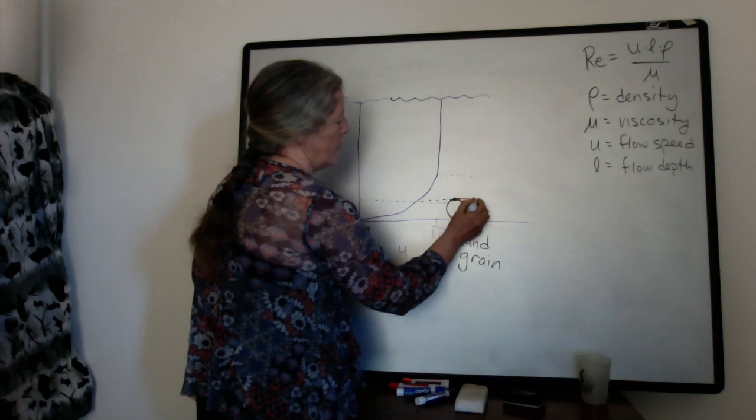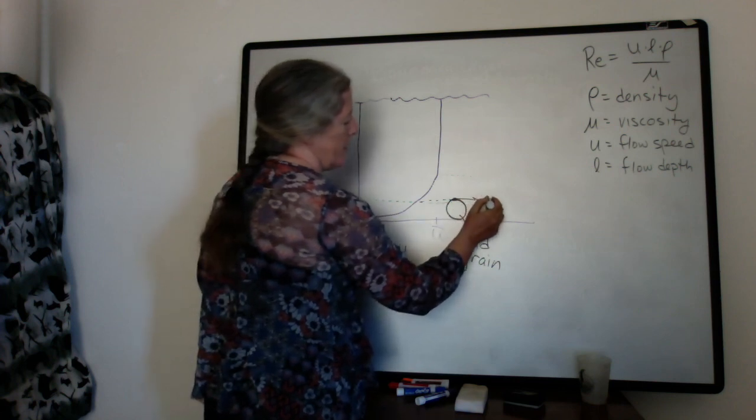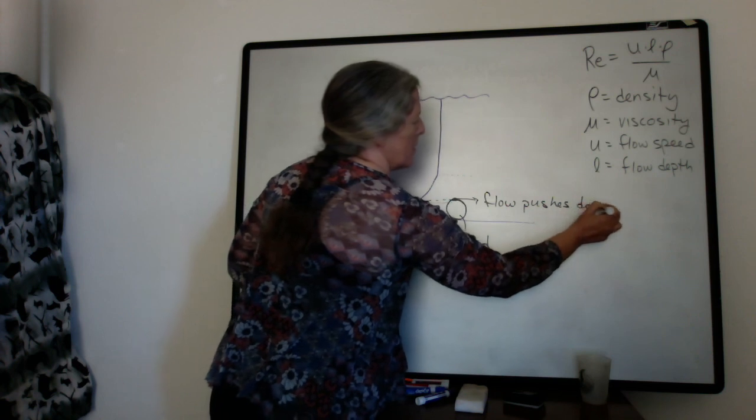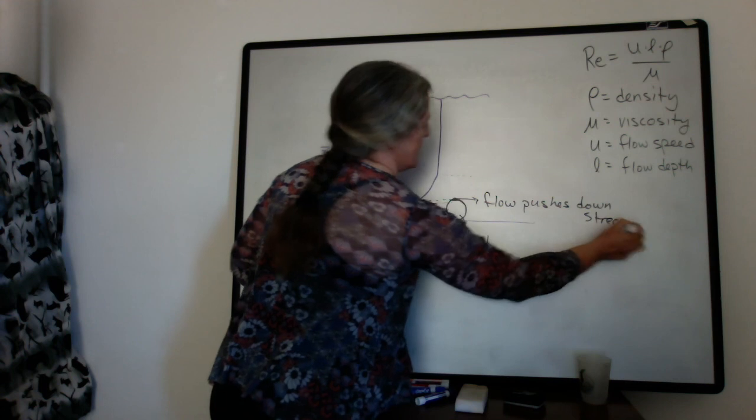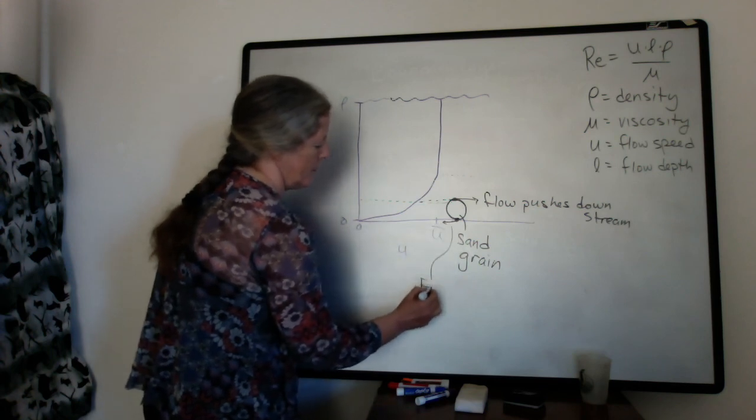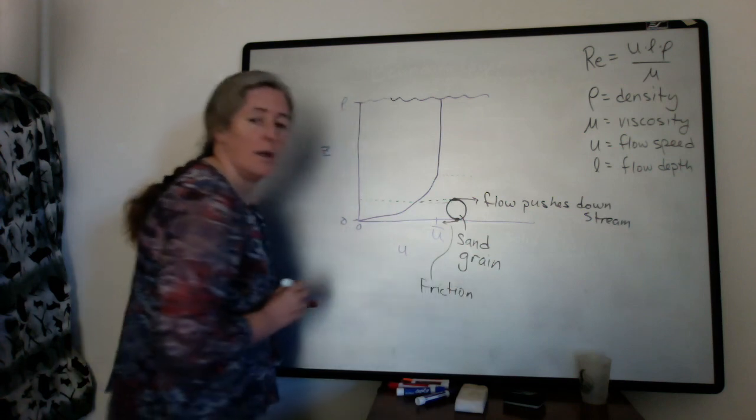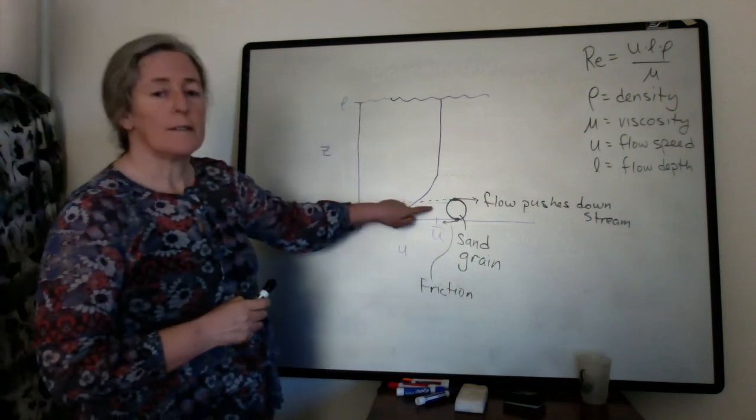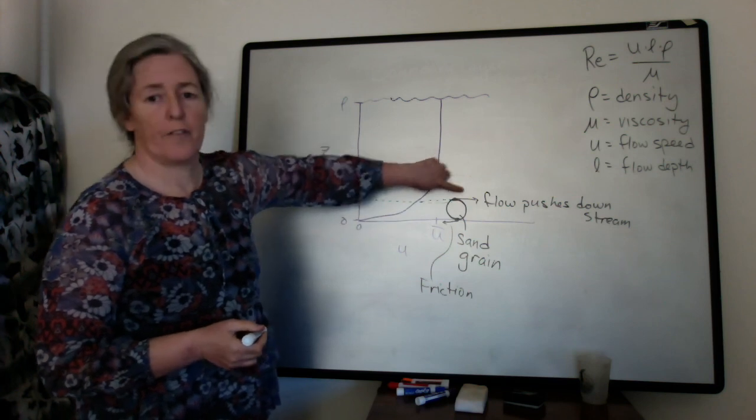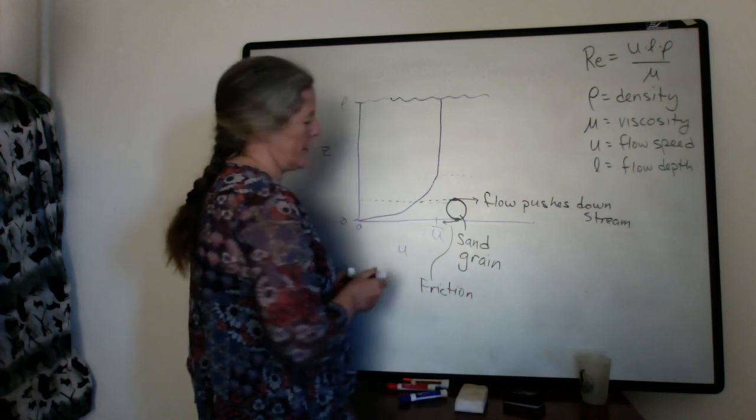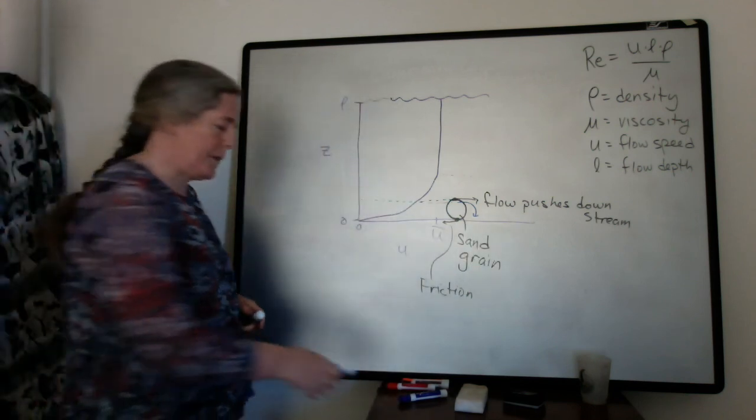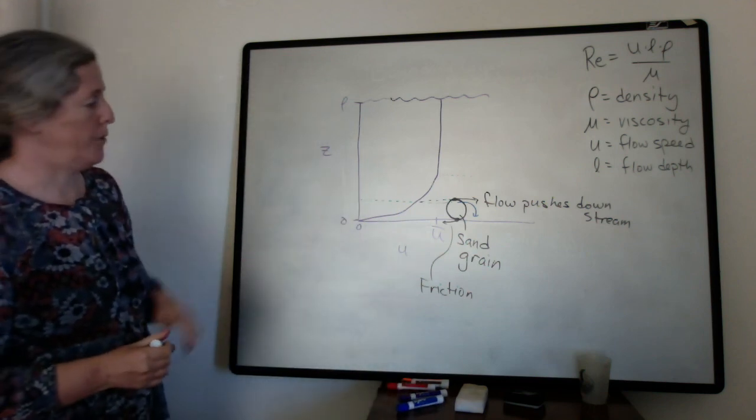So the force on the grain varies with height on the grain. And so here you have a force that's pushing downstream from the flow. And in contrast, at the bottom of the grain you have a friction force pushing up this way. So it's pretty easy to imagine that if this was a flat bed, if the flow pushes hard enough, that grain can end up rolling down.